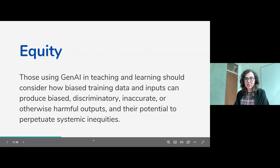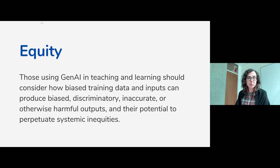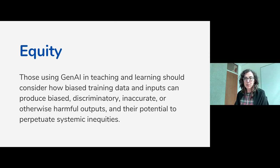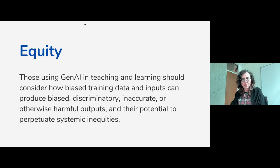Another topic that was very important to the committee from the very beginning was paying close attention to equity when thinking about generative AI in teaching and learning. Our principle states: those using generative AI in teaching and learning should consider how biased training data and inputs can produce biased, discriminatory, inaccurate, or otherwise harmful outputs, and their potential to perpetuate systemic inequities. When you're training on data that has biases or focuses on particular types of knowledge production and methodologies, you're going to get outputs that reflect those.